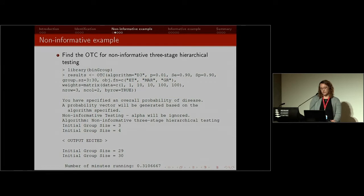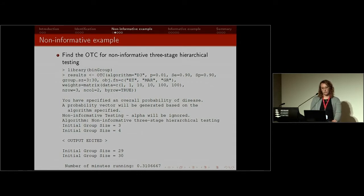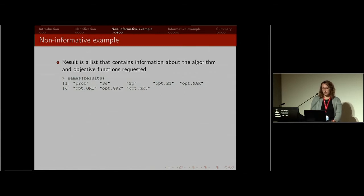You can see it prints some information explaining what algorithm you're using, and it prints out progress showing how many group sizes have been processed. This is important because it can take quite a long time depending on the algorithm and number of group sizes considered. If you consider a group size of say 50, you can imagine there are many possible testing configurations — a group of 49 and 1, 48 and 2, 48 and 1 and 1, and every possible configuration within that up to 50 individuals. Those increasingly large group sizes can take quite a bit of time to iterate through. But this example takes about 20 seconds to run.